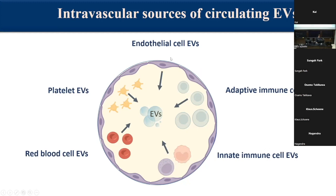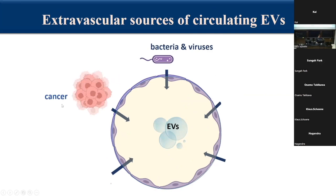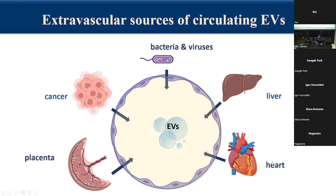There are also extravascular sources of circulating EVs, even though their percentage or frequency is not that high in the circulation. We may have bacteria, and perhaps viruses as well. We sometimes find cancer-derived vesicles and other organ-derived vesicles like liver-derived vesicles. There is evidence that in chronic liver disease, liver cell-derived vesicles find their way to the circulation, as do placenta-derived vesicles and cardiomyocyte-derived vesicles.